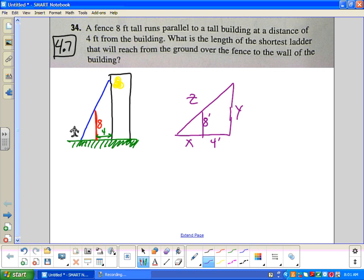So if I think about that, we're going to minimize z. I'm going to draw the two triangles separately right now. I've got x and 8. And I have x plus 4, y, and z.